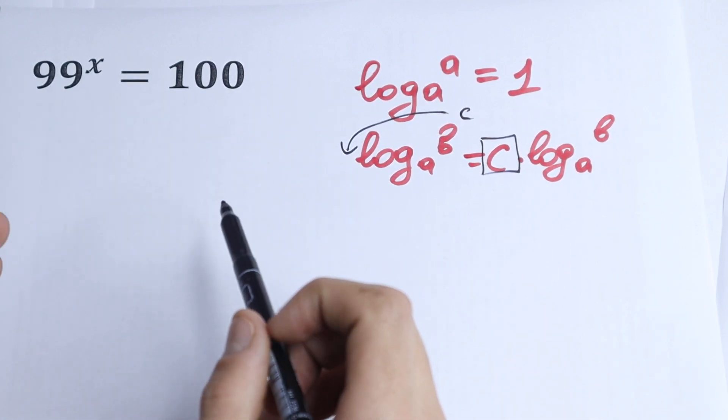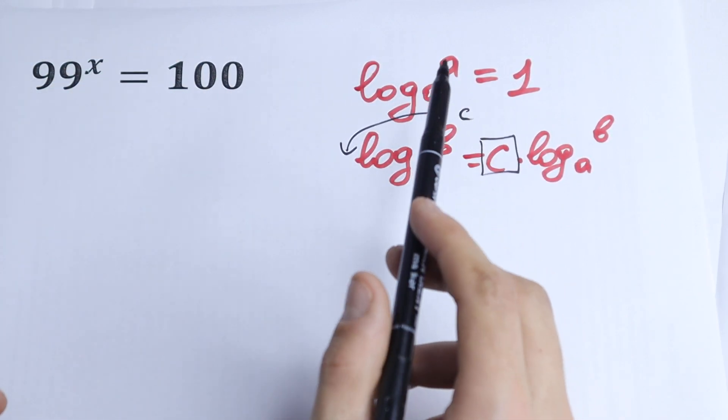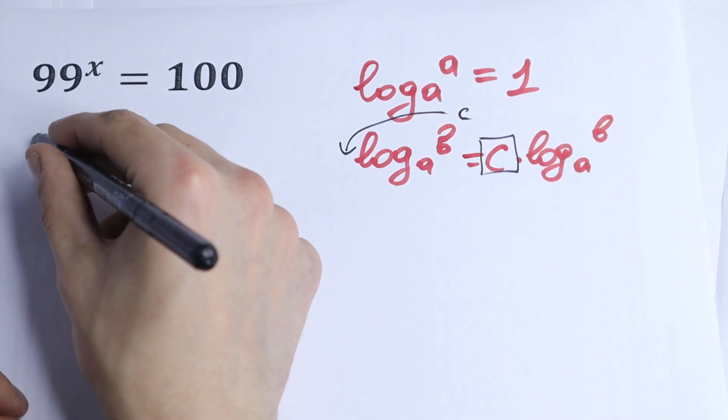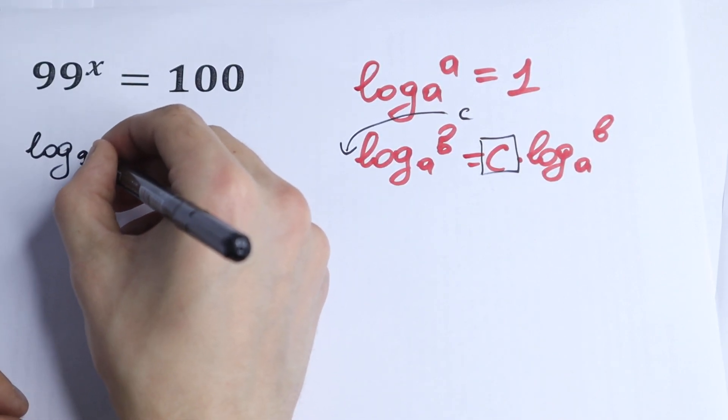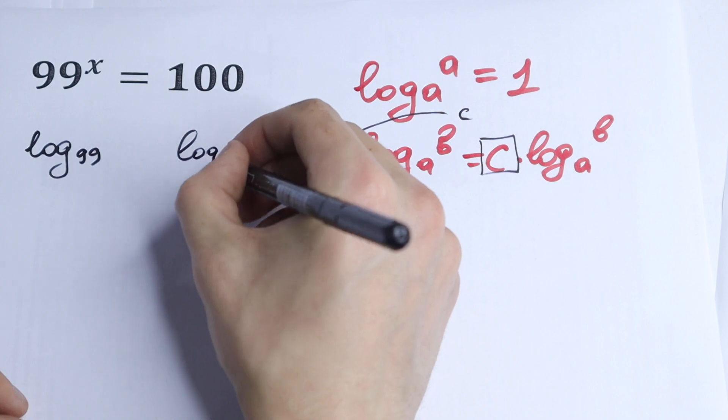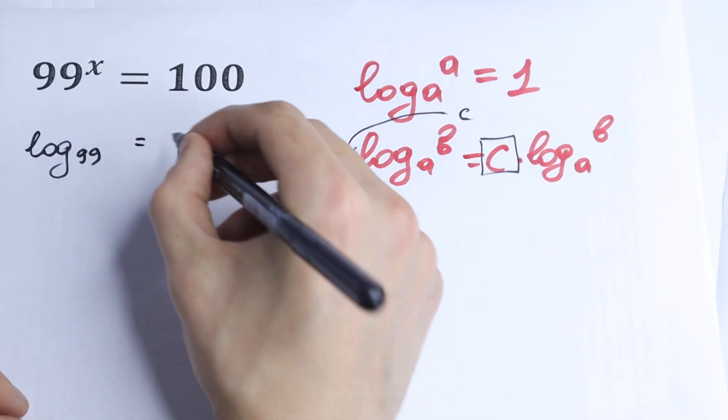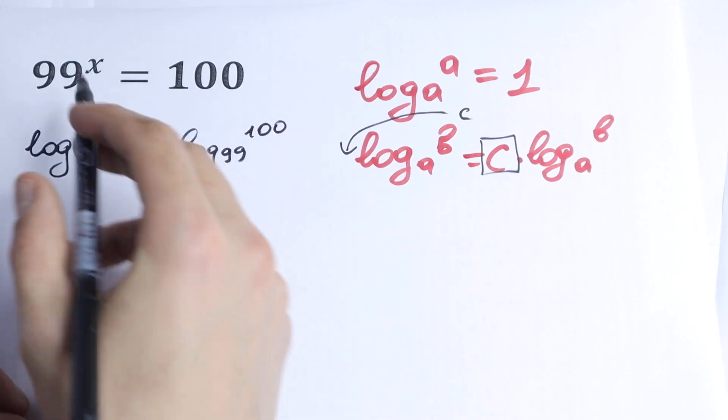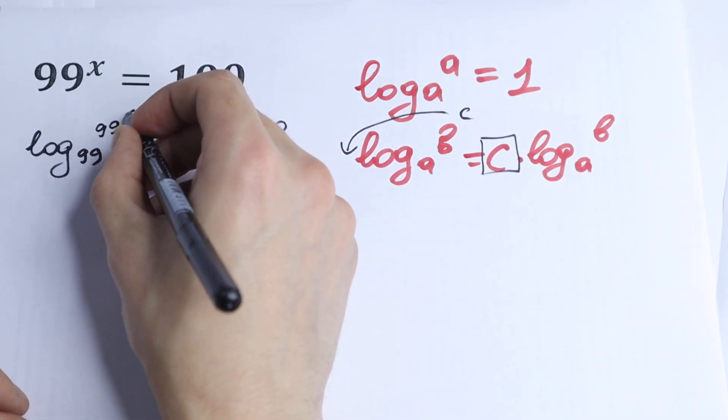Let's take log from both sides. But what base? For sure it will be log base 99. Log base 99 and log base 99. And just take this log base 99 right here as well.